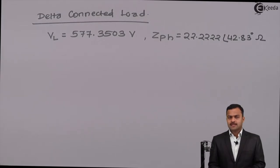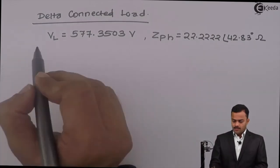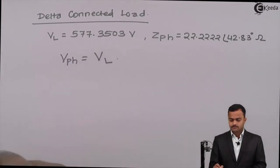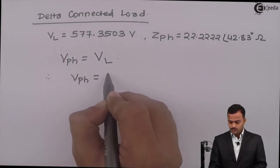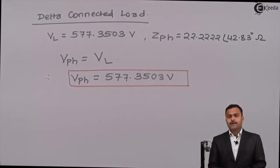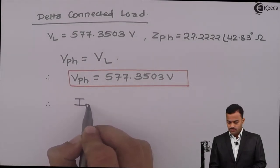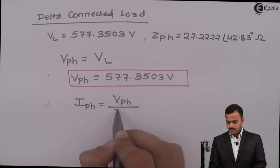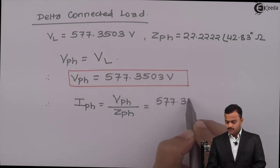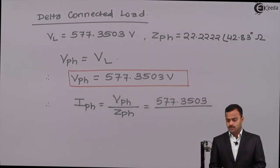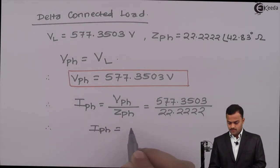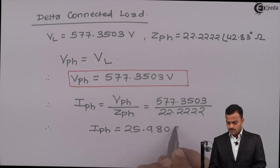For a delta-connected load, phase voltage equals line voltage, so VPH = 577.3503 volt. Phase current equals phase voltage divided by phase impedance: IPH = 577.3503 / 22.2222 = 25.9808 ampere.